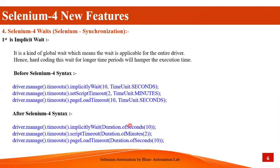In synchronization there is also a change in Selenium 4. Implicit wait is a kind of global wait which means the wait is applicable for the entire driver. Hard-coding this wait for a longer time period will hamper the execution time. I'll explain the difference between implicit and explicit wait practically — it is a very important question for interview purposes. Thread dot sleep is not related to Selenium but is part of Java.